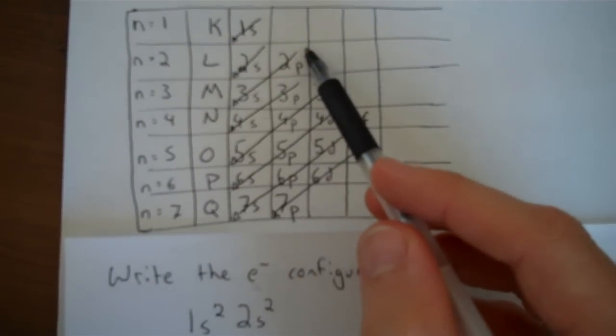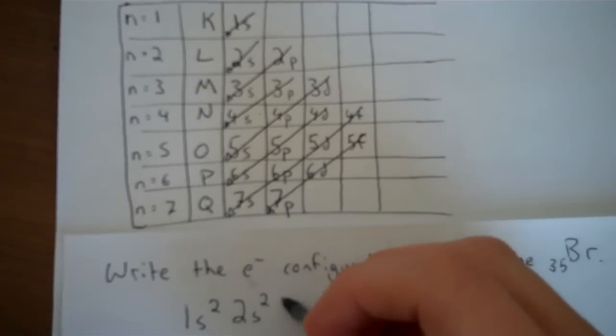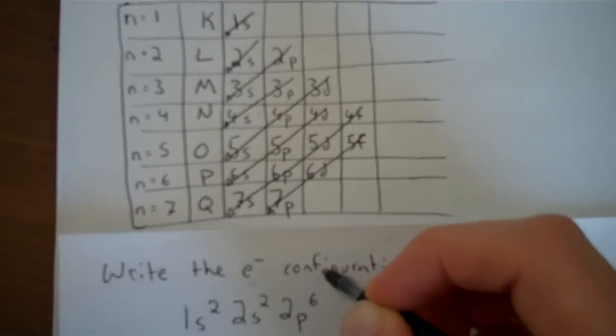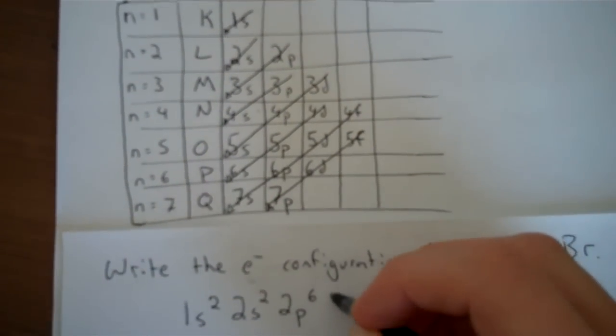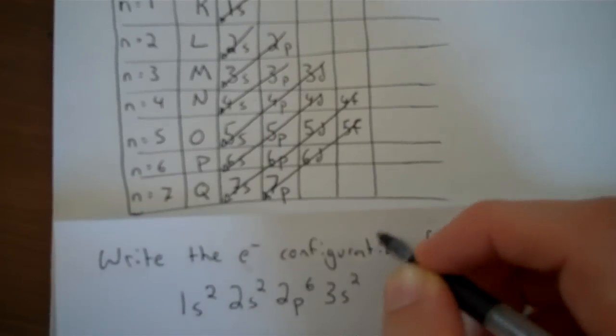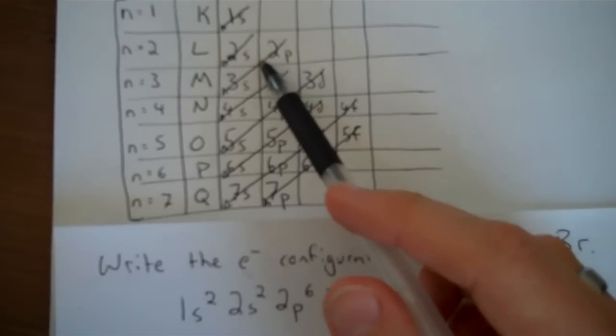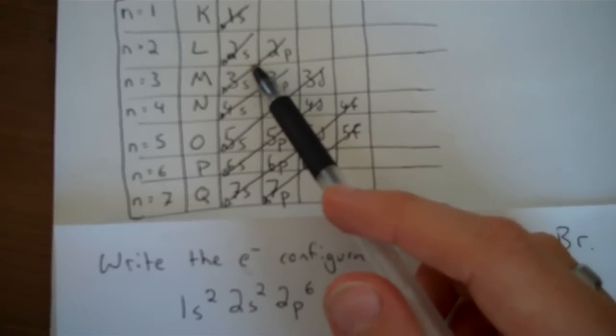After 2S, I start filling 2P. P subshell can hold a maximum of six electrons. After 2P, follow my line, then I do 3S. 3S again holding two—all S's hold a maximum of two, could be one or two.